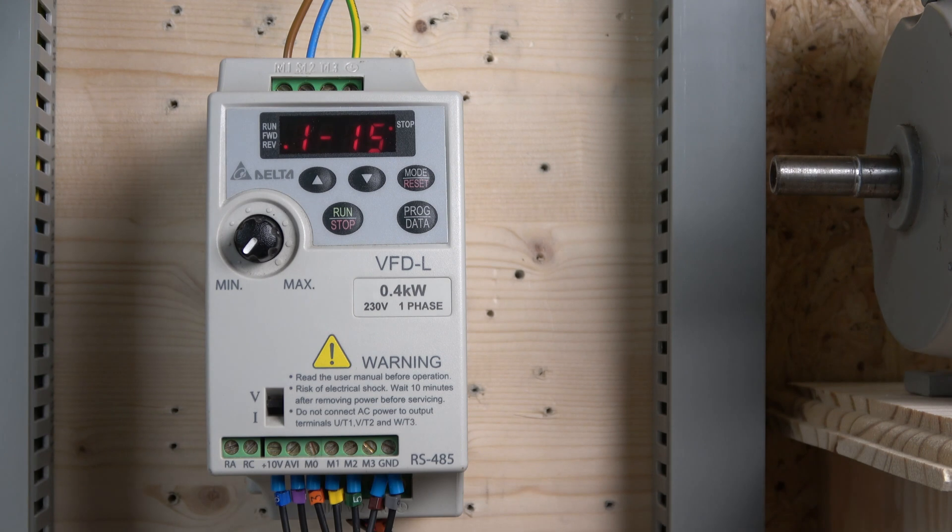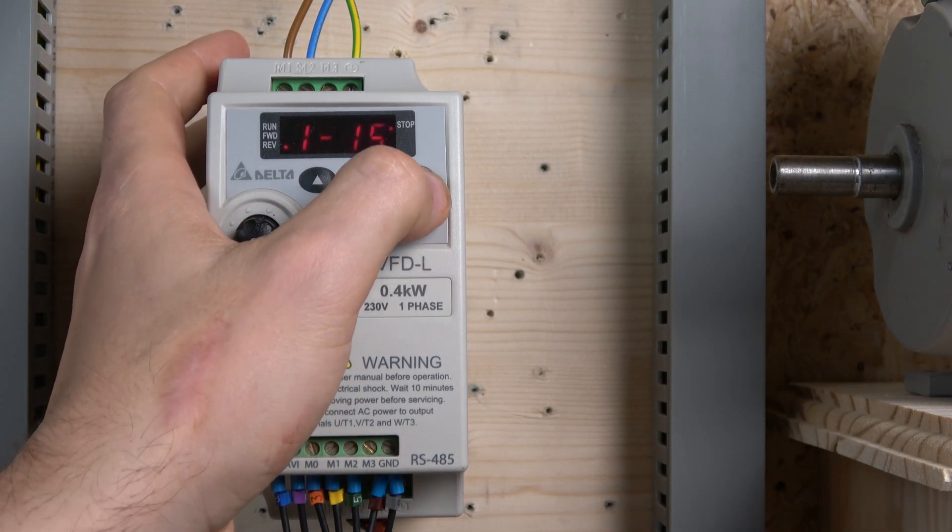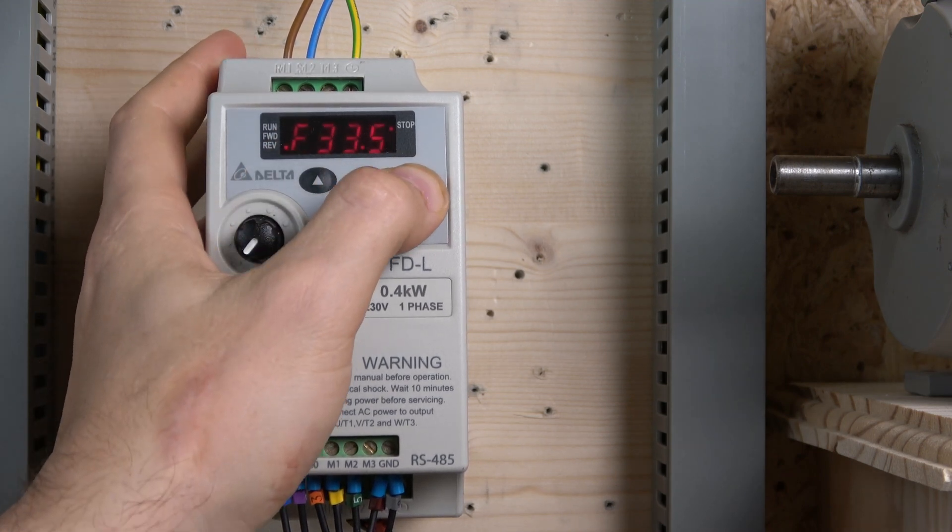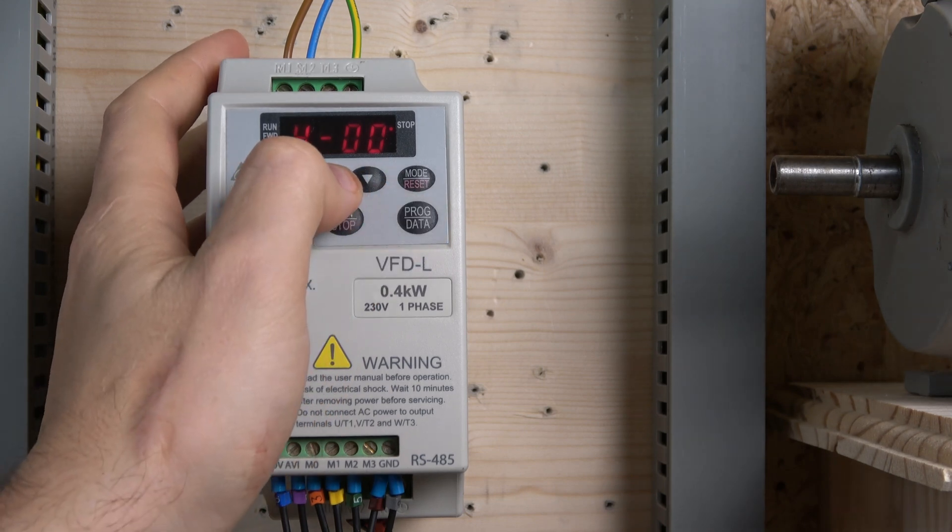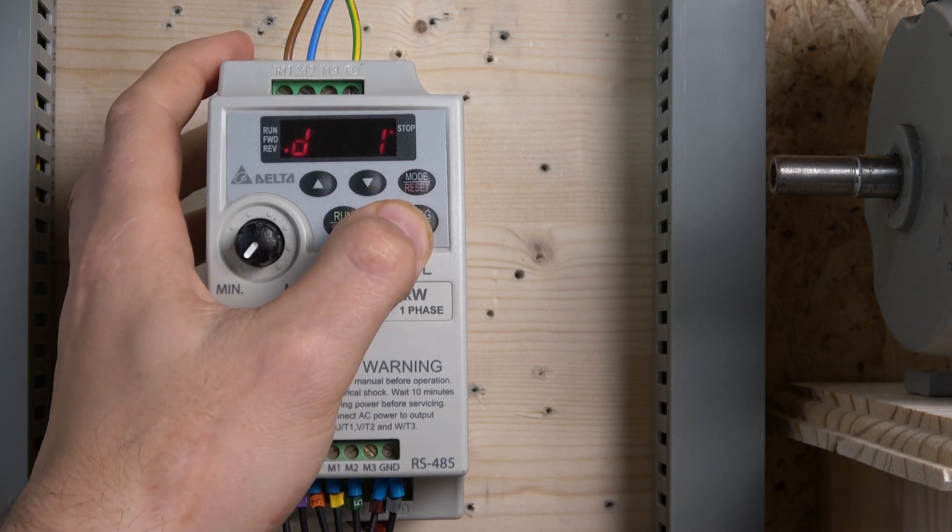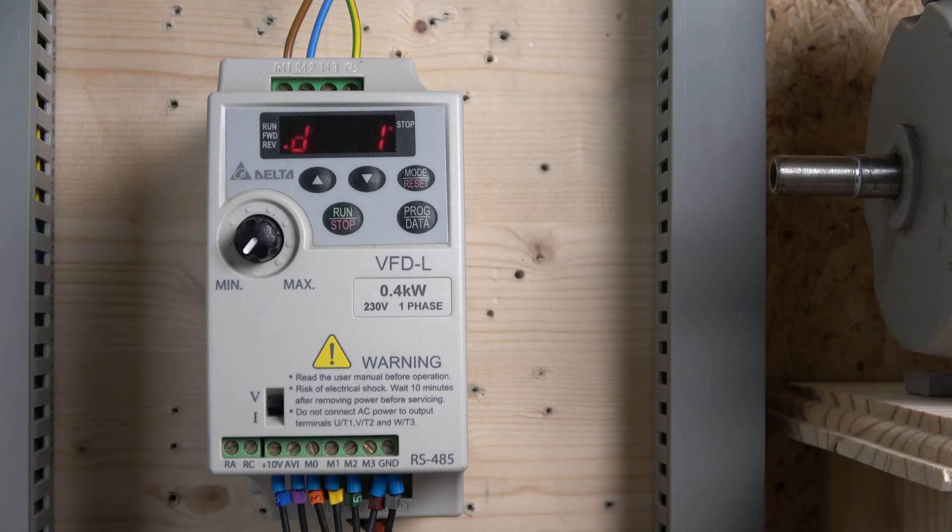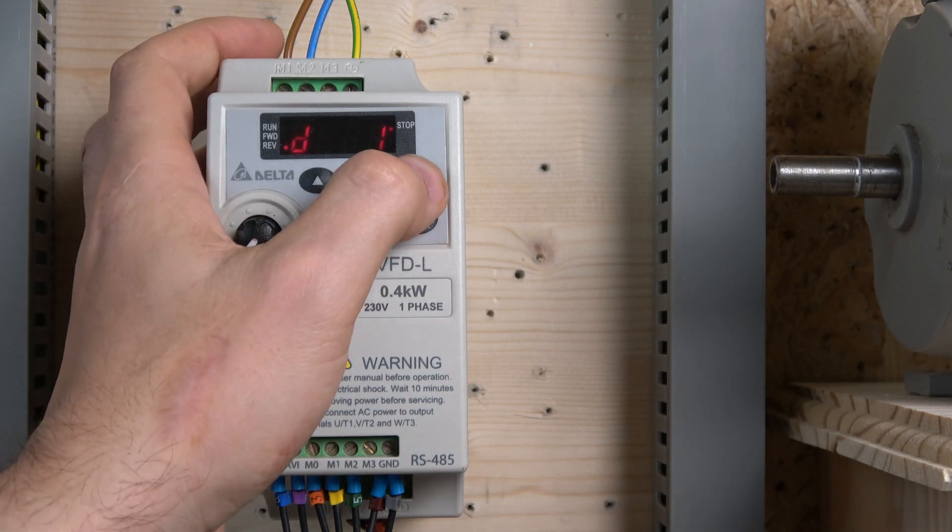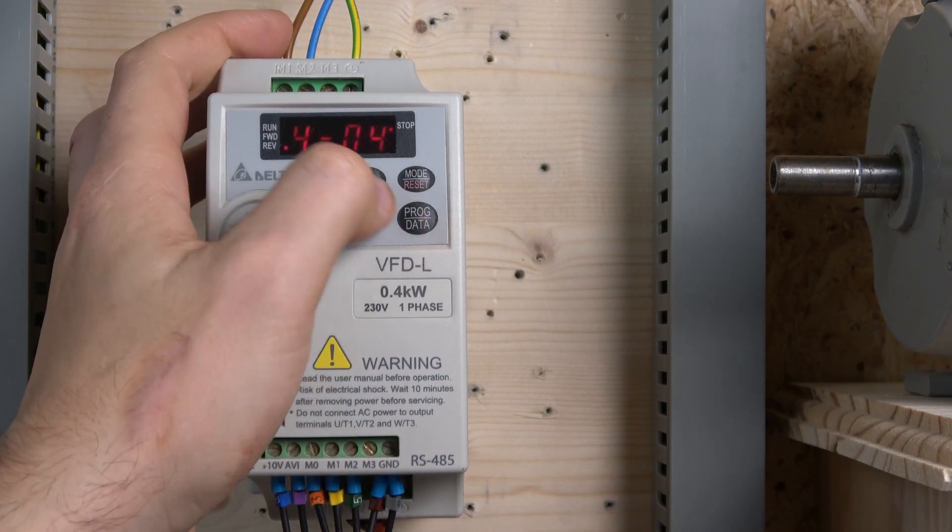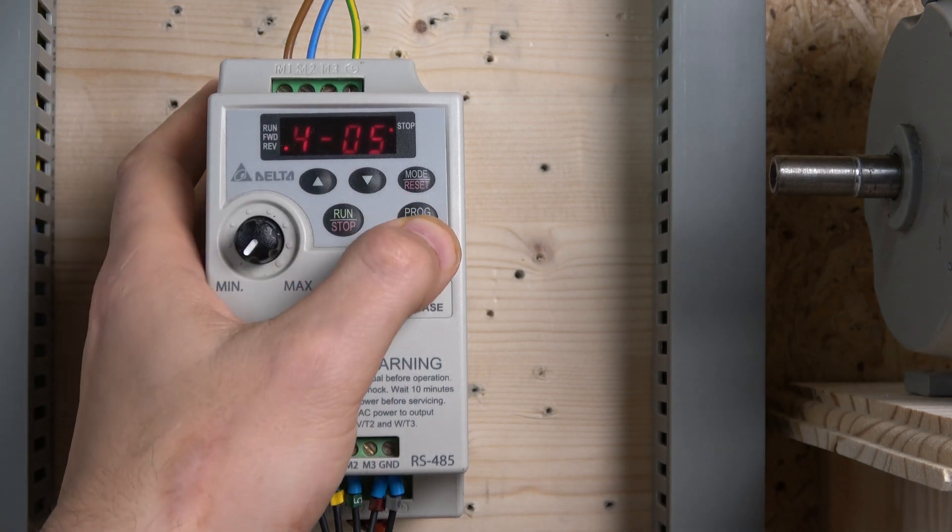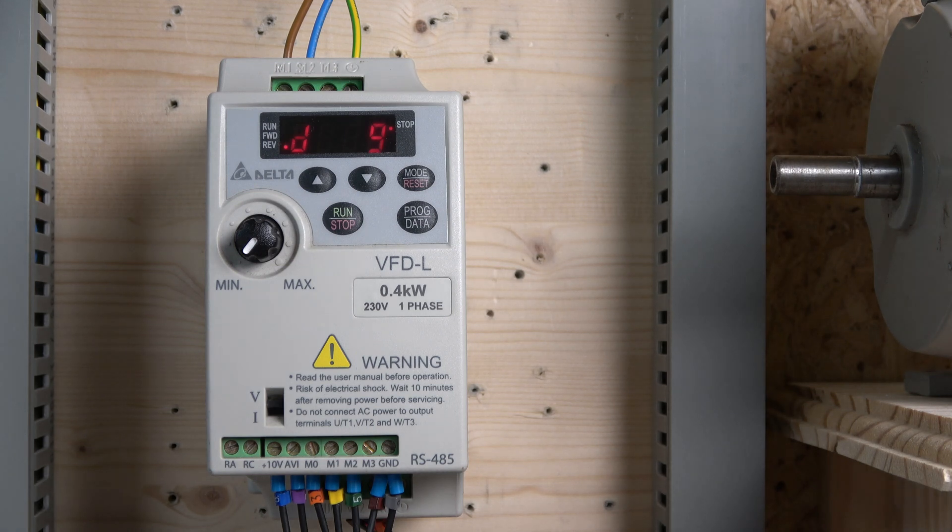From there on we need to set up our IOs. To set up IOs you need to go to parameter group 4. The first one is 4-4, and you change that one to one which will make M0 forward stop and M1 reverse stop. The next one you need to set up is 4-5 which is going to be M2, which is going to be jog operation, which is at number nine. So all our IOs are pretty much set up. This is where the potentiometer comes in, 10 volts and AVI. Let me put the cover on and we'll see how it works.